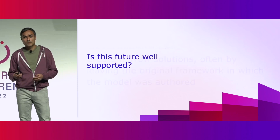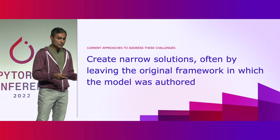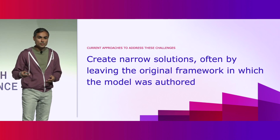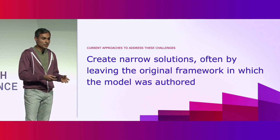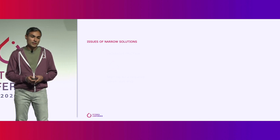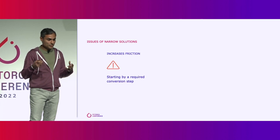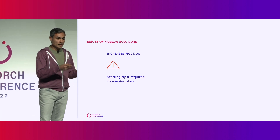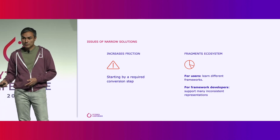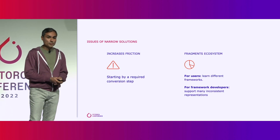How is the future well supported? Many existing solutions have been focused on creating narrow solutions, forcing users into abstractions and semantics that were not those they used when they authored the model. This has some unfortunate consequences. It increases friction because developers now need to think about a different programming model in order to author a program that can successfully be deployed across different devices. And it also fragments the ecosystem — users have to learn a different framework, and for framework developers there is a lot more surface to cover.